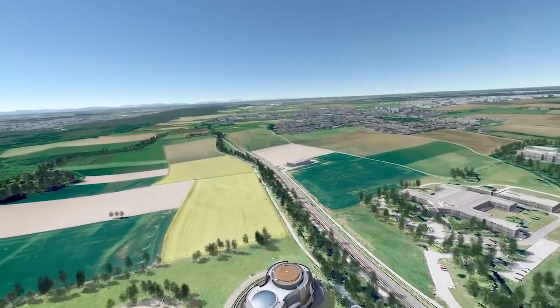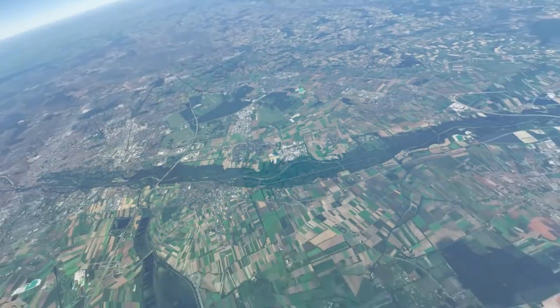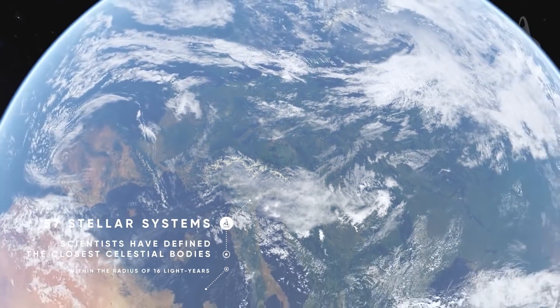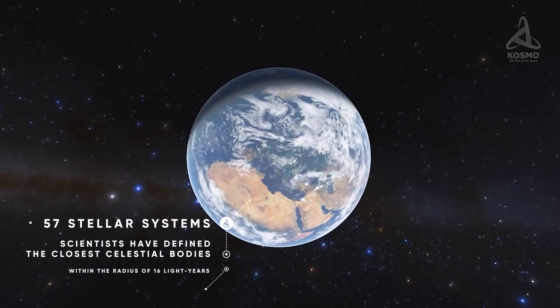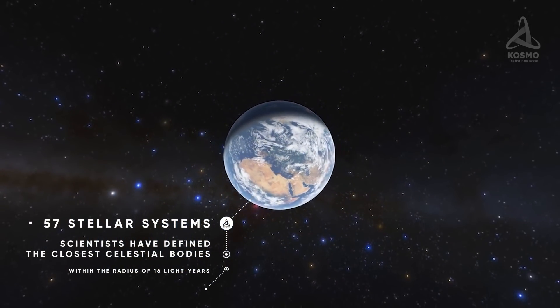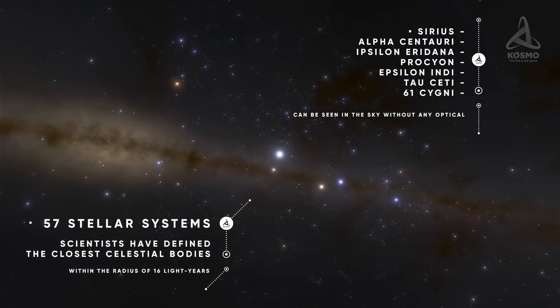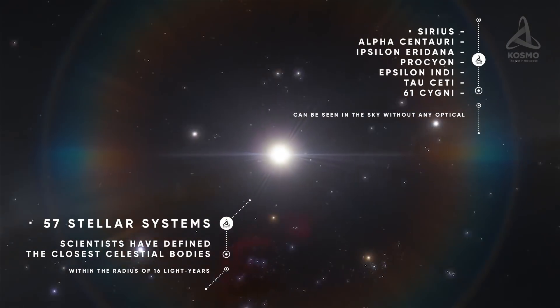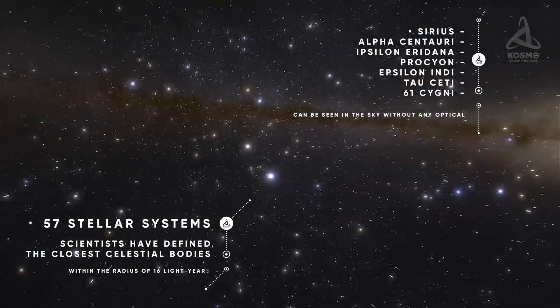Scientists have defined the closest celestial bodies within the radius of 16 light years. Fifty-seven stellar systems have been pinpointed, but only seven of them can be seen in the sky without any optical assistance. These are Sirius, Alpha Centauri, Ypsilon Eridana, Procyon, Epsilon Indi, Tau Ceti, and 61 Cygni.